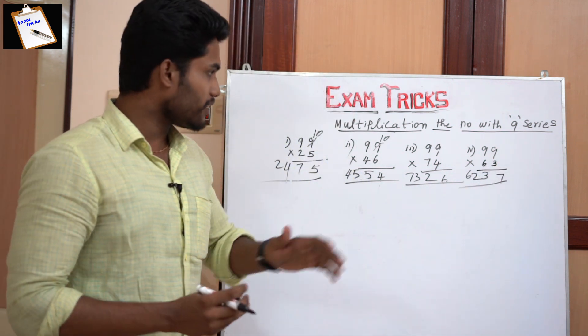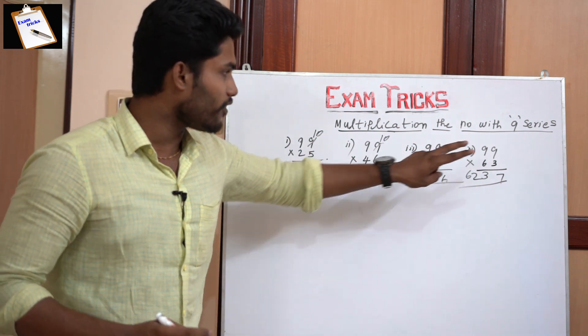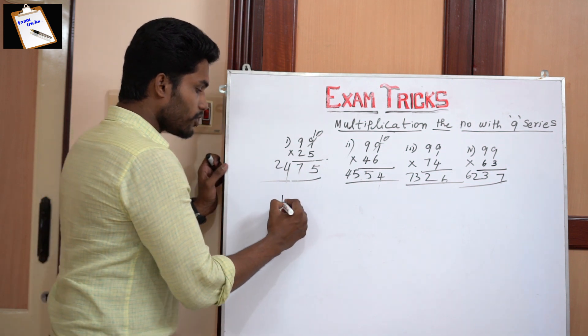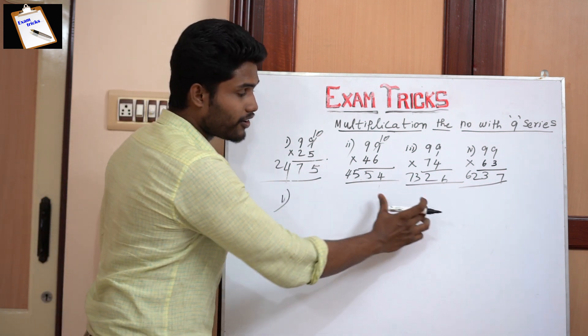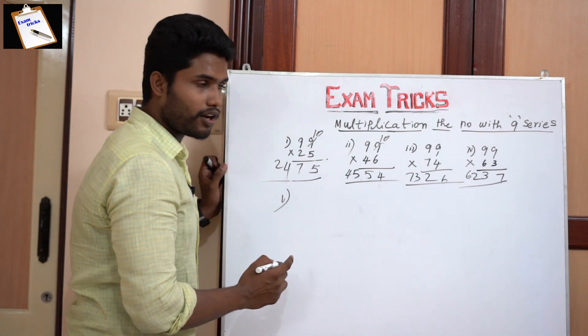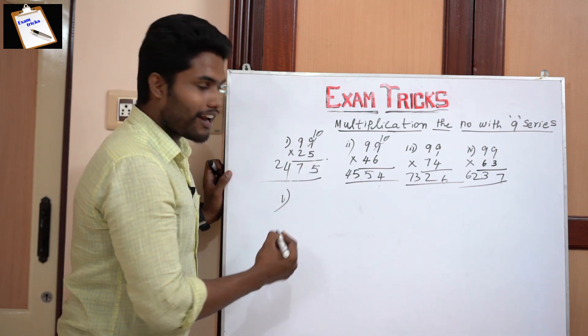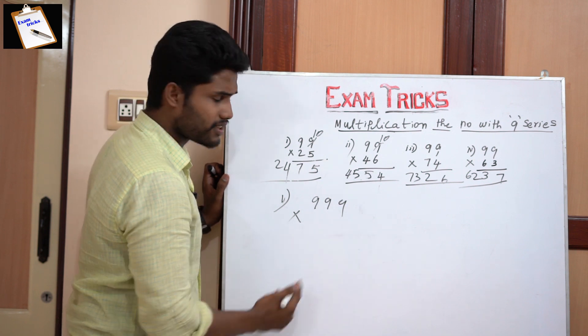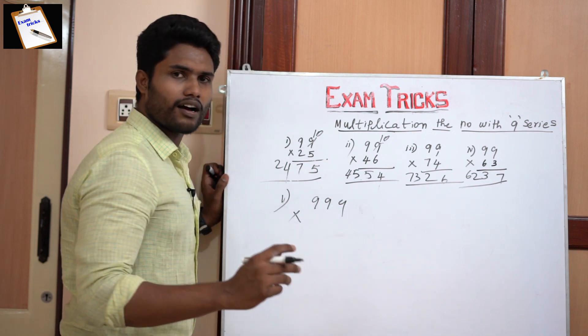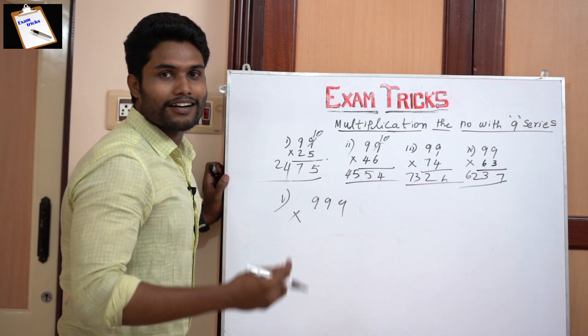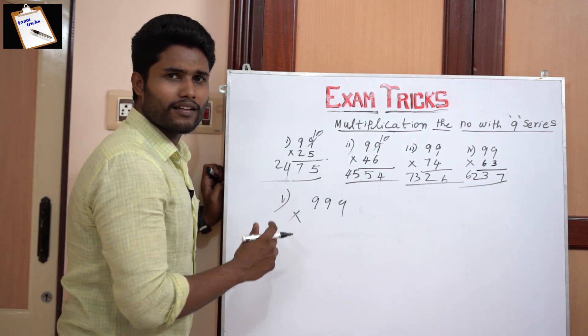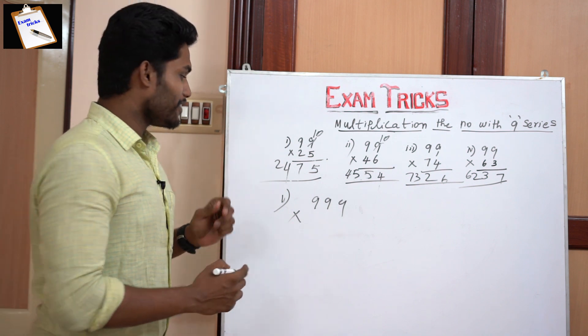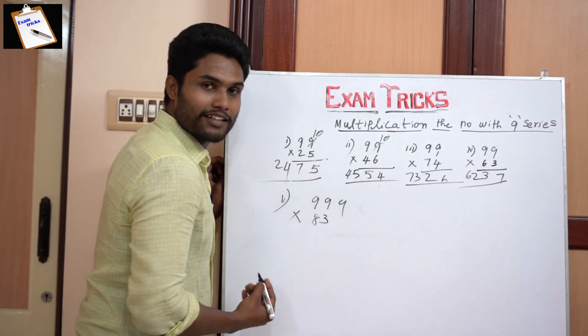See, this shortcut is not only for double-digit or two-digit numbers, we can also use it for three-digit, four-digit, and five-digit numbers. For example, I'm writing triple nine into three digits. I'll multiply with another three-digit number. Mr. Friend, you can tell some number? 8, 3, 7, okay.